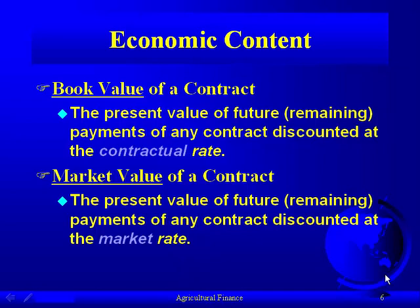If rates drop and you wanted to refinance your loan — whether a house, car, bond, or any type of contract bought or sold on a daily basis — it becomes a real issue. In the mortgage market, some people went with a variable rate loan, so their payments adjusted to the market. But when rates started going up and they couldn't make their payments, it became very difficult. If rates were going to go up, they'd have been better off with a fixed contractual rate.